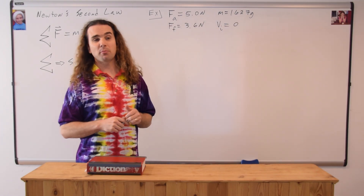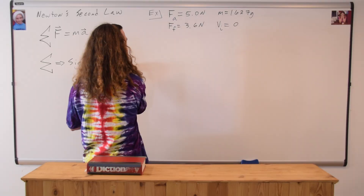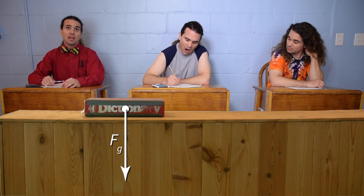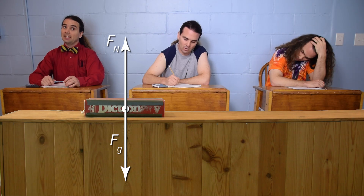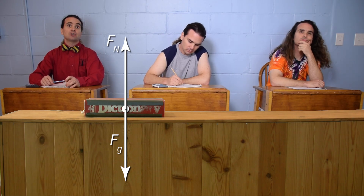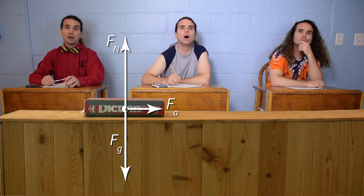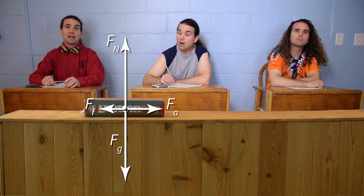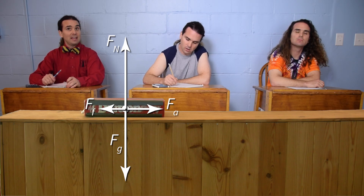We're doing a problem with forces, so we need to draw the free body diagram. There is the force of gravity, which is down, and the force normal, which is perpendicular to the table and pointing up. There is also the applied force, which is to the right, and the force of friction, which acts opposite the direction of motion, so it is to the left.